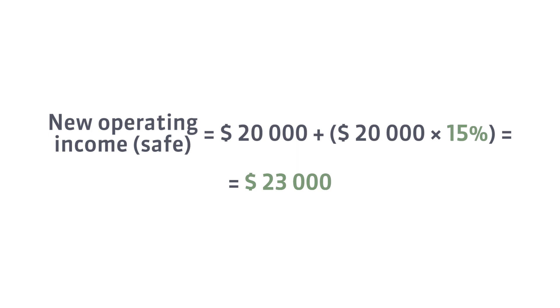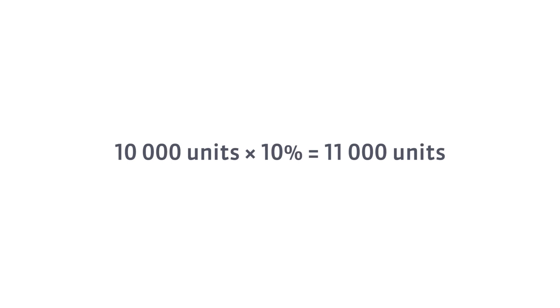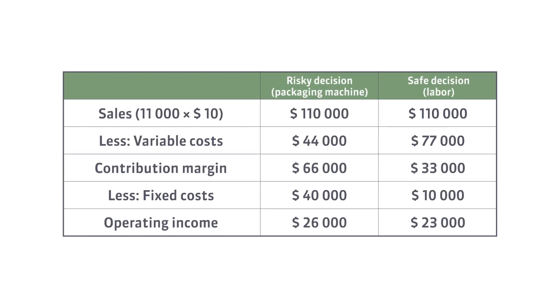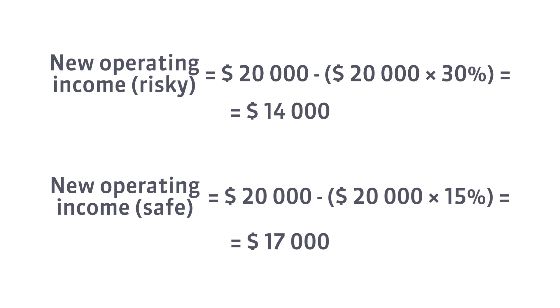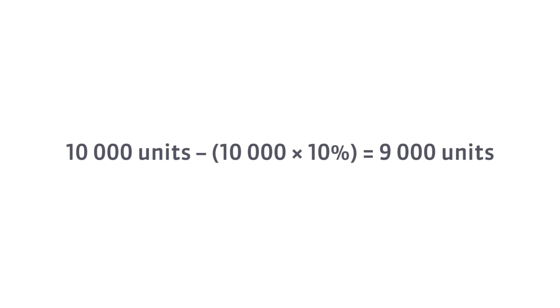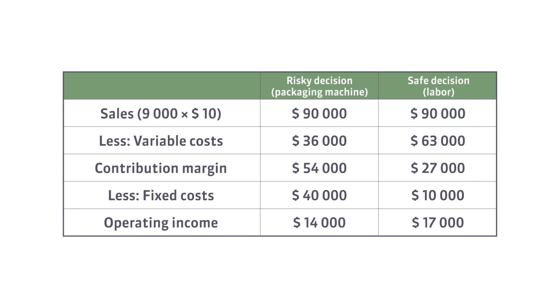Let's check this by preparing a projected income statement. New sales will be higher by 10%, meaning 11,000 units. The income statement confirms the operating income figures. Remember that leverage works both ways — as sales decrease, the risky version will also show much higher percentage decreases. When sales decrease by 10%, operating income decreases by 30% for the risky version.